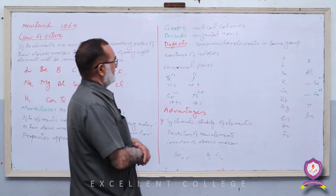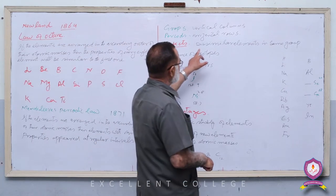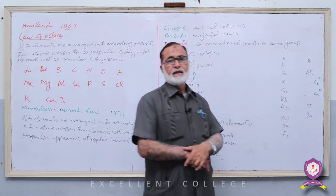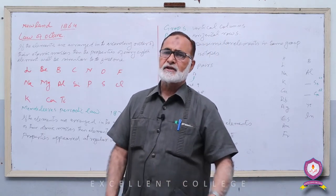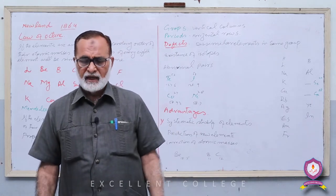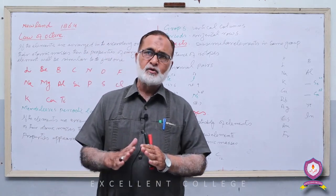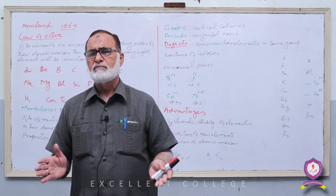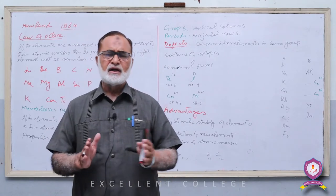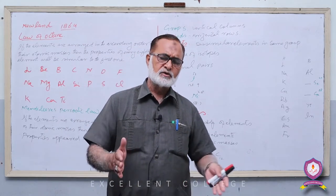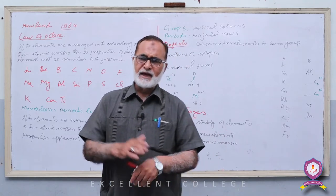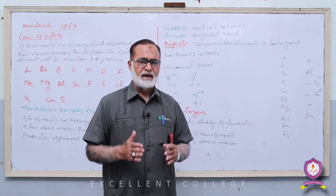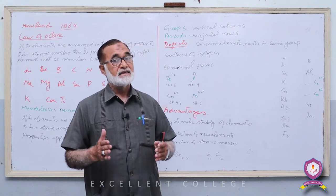پہلا defect: Dissimilar Elements in Same Group۔ Mendeleev نے جو groups ترتیب دیے ان میں ایسے elements موجود تھے جن کی properties quite similar نہیں تھیں، بلکہ بالکل مختلف تھیں — لیکن انہیں ایک ہی group میں رکھا گیا، جبکہ concept یہ تھا کہ ایک group میں properties ایک جیسی ہوتی ہیں۔